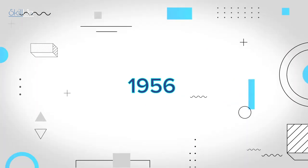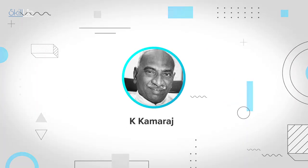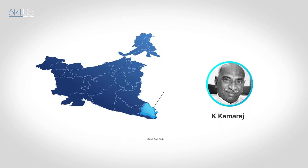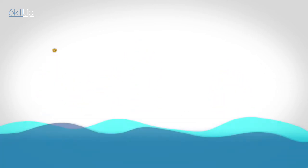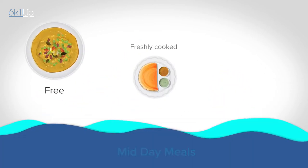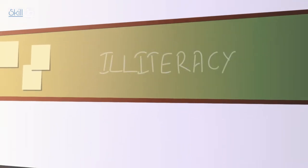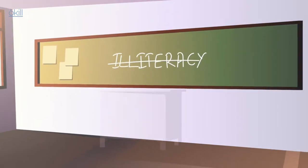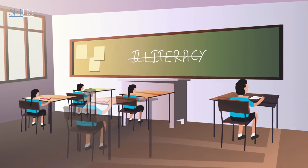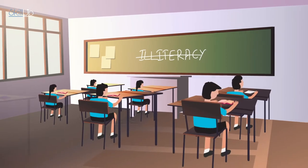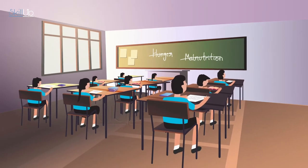Back in 1956, Kay Kamaraj, the then Chief Minister of Tamil Nadu, started the scheme to provide free, freshly cooked and healthy midday meals in public schools to fight illiteracy. This innovation was pioneered to draw students from unprivileged homes to schools, while combating hunger and malnutrition.